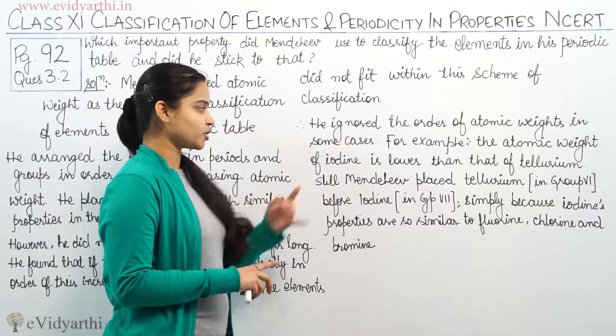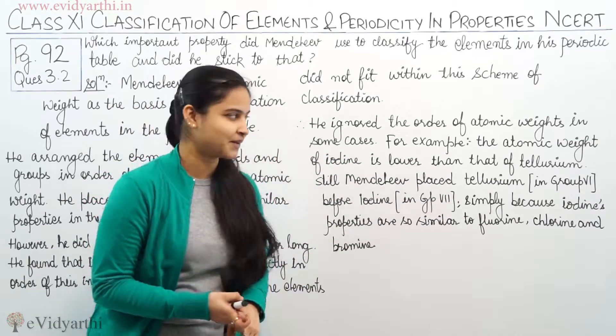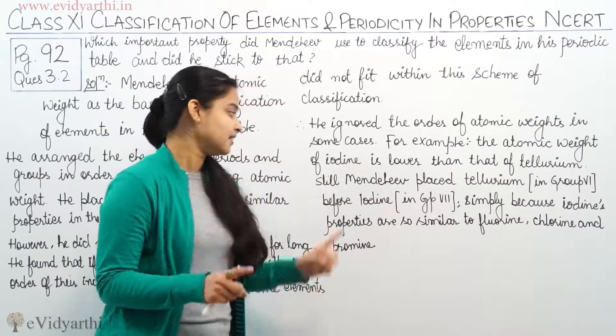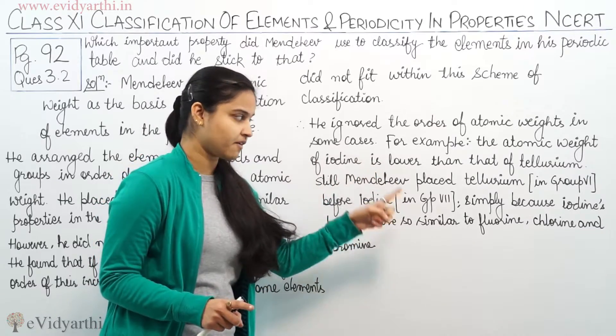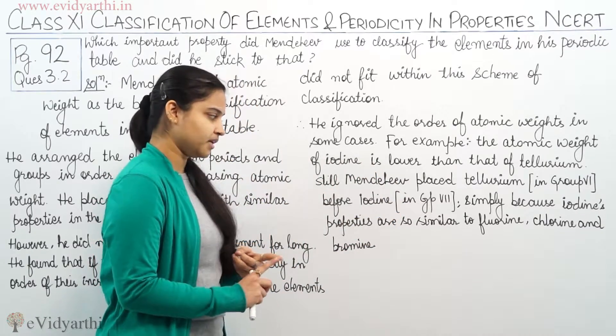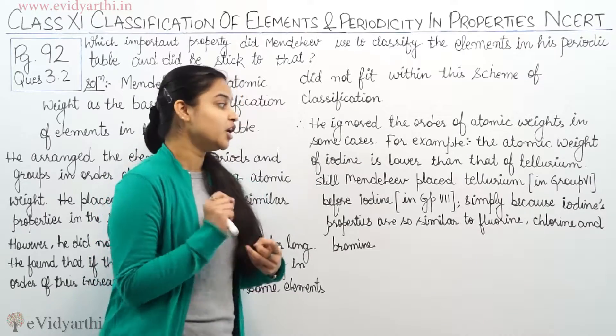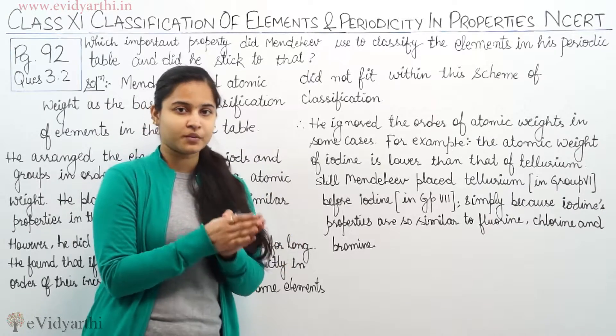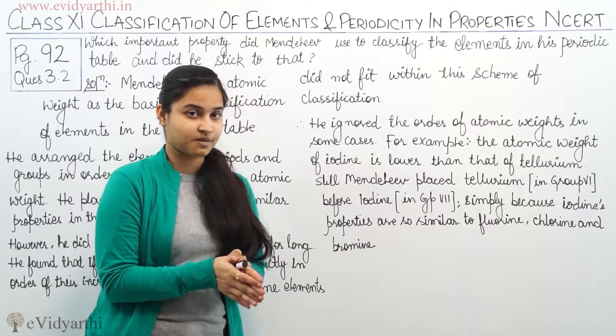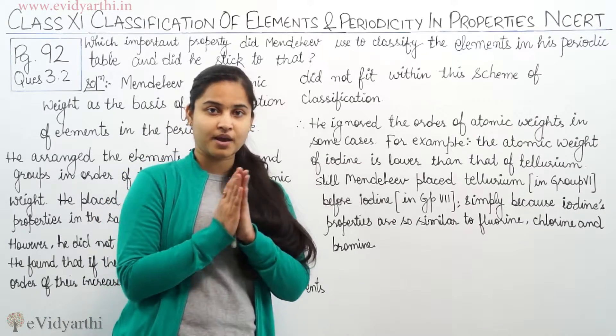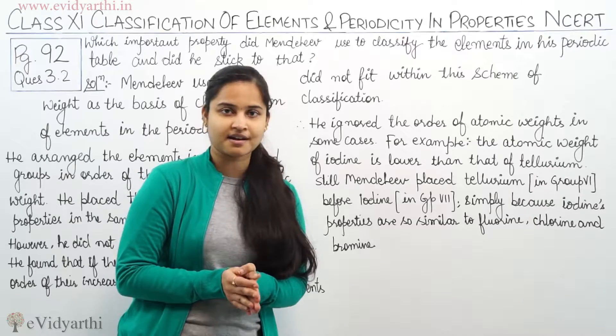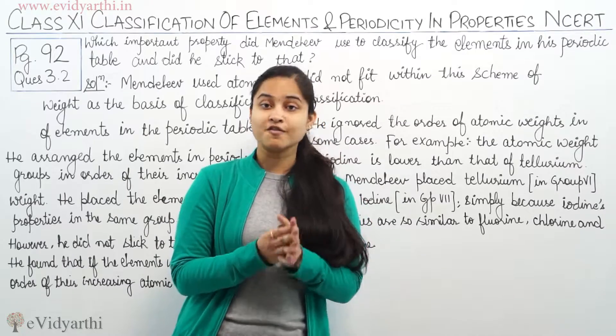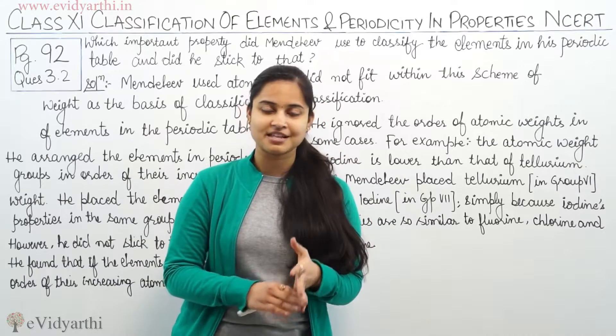For example, the atomic weight of iodine is lower than that of tellurium. Still, Mendeleev placed tellurium in group 6 before iodine which was in group 7, simply because iodine properties are so similar to fluorine, chlorine and bromine. He ignored this atomic weight property in the case of iodine and tellurium. Despite iodine having lower atomic mass, iodine was placed in group 7 and tellurium in group 6, just because iodine's properties matched with fluorine, chlorine and bromine.